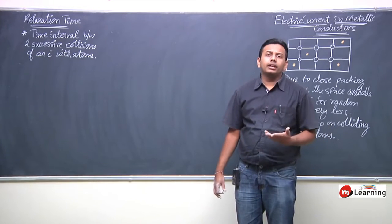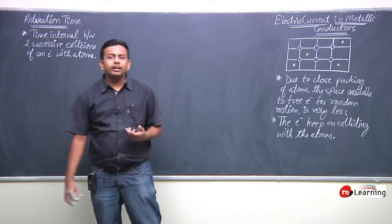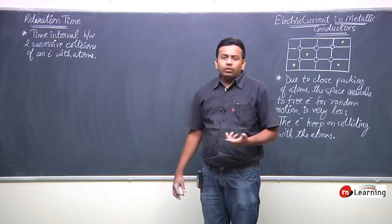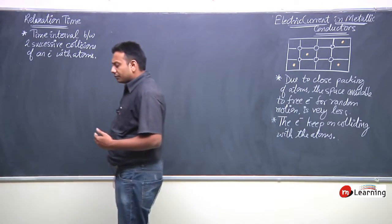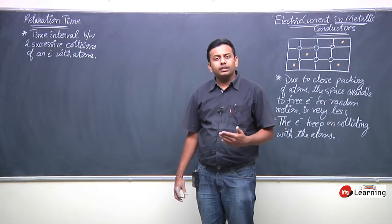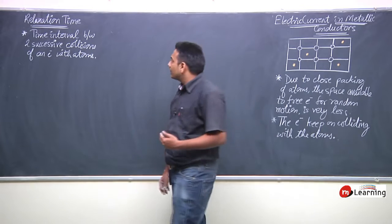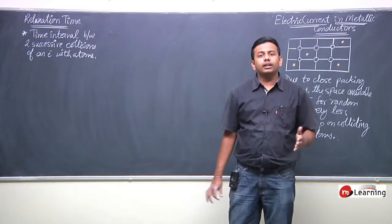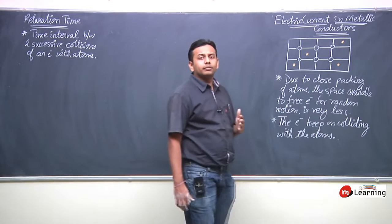This time interval can be different for every electron. For every electron we will get a different time interval — different relaxation times. It is generally represented by tau: tau1, tau2, tau3, tau4, and so on — different time intervals for each electron.